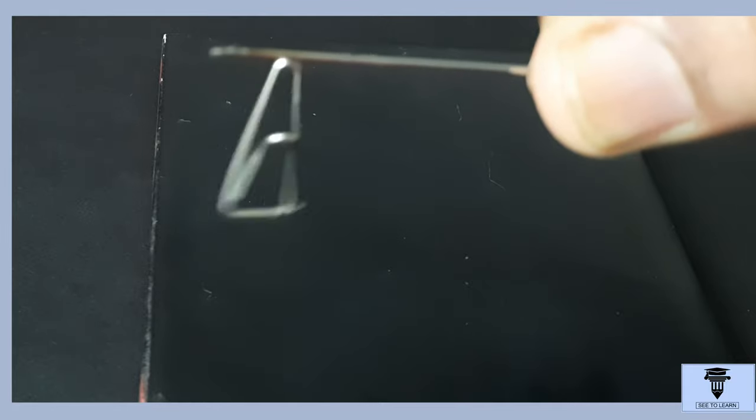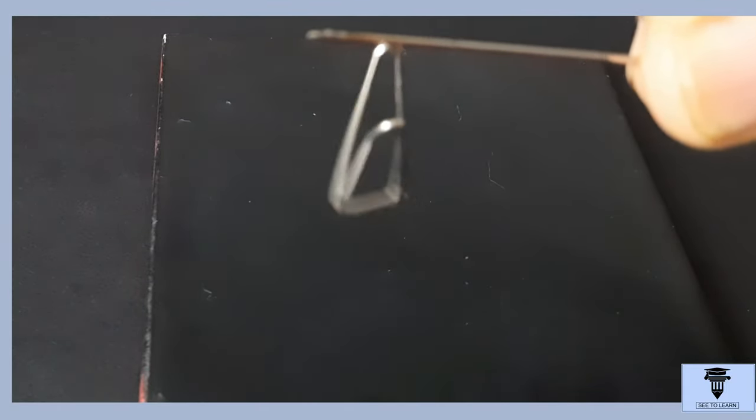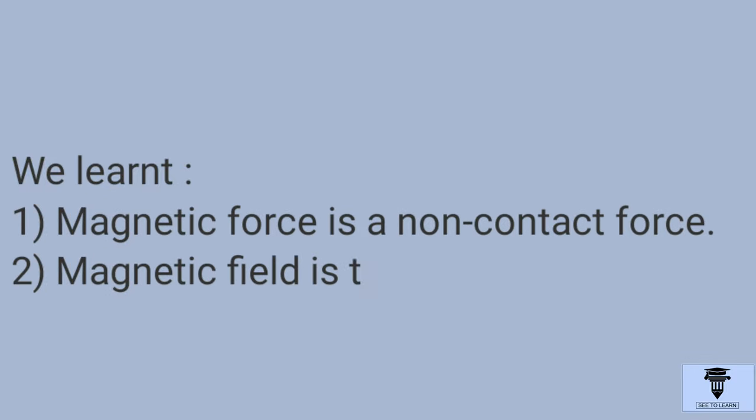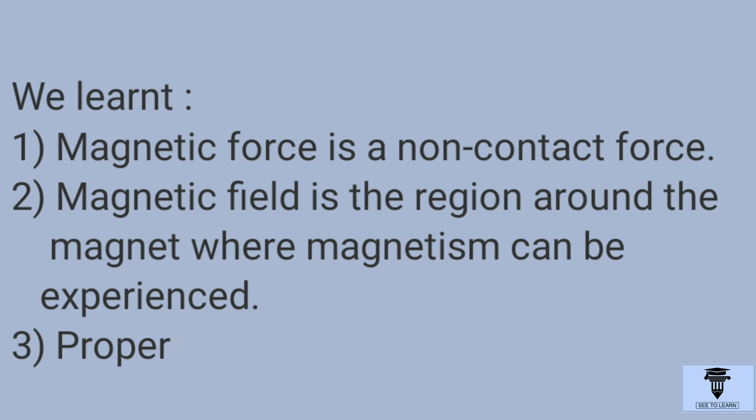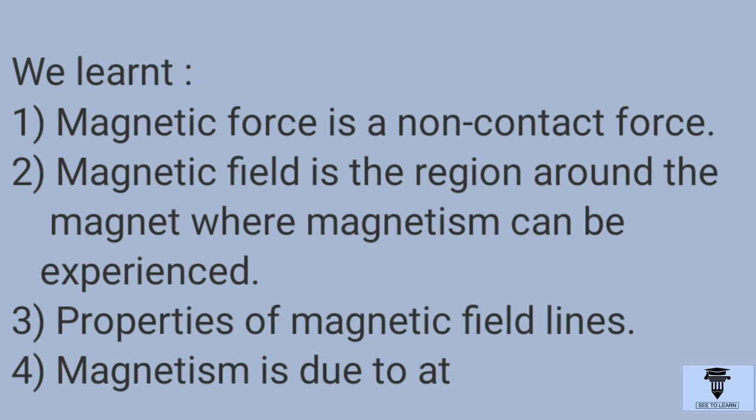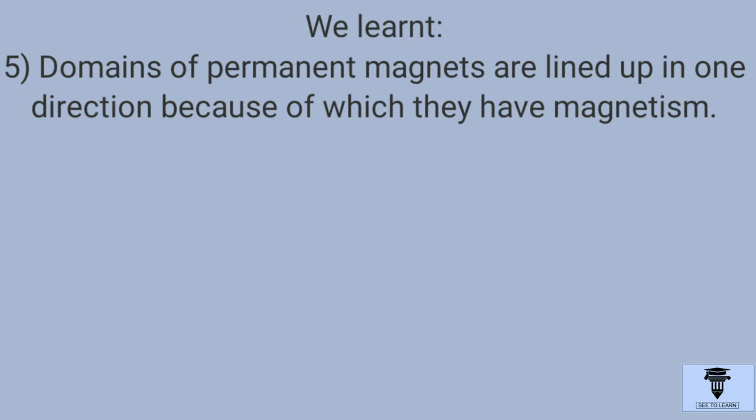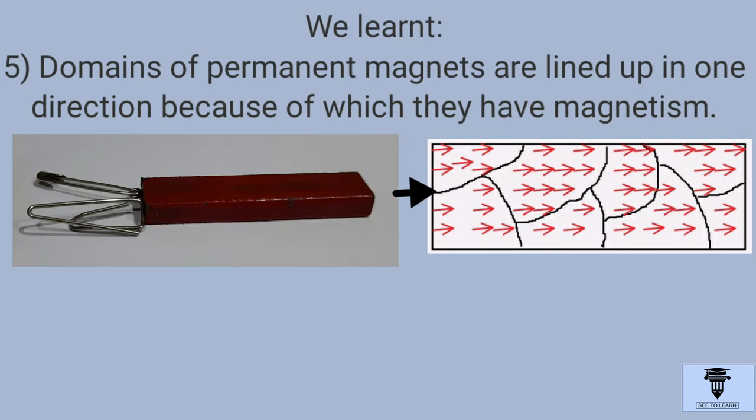Thus, friends, in this video of See2Learn, we learned that magnetic force is a non-contact force. Magnetic field is the region around the magnet where magnetism can be experienced. Then we discussed properties of magnetic field lines. Then we learned that magnetism is due to atomic structure of a material. And that the domains of a permanent magnet are aligned up in one direction because of which they have magnetism.